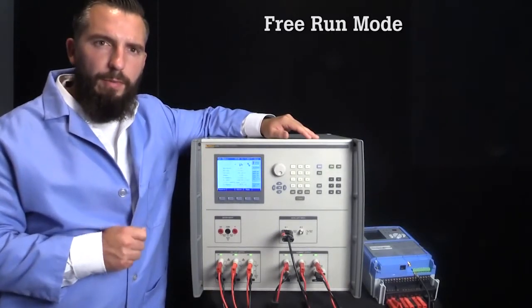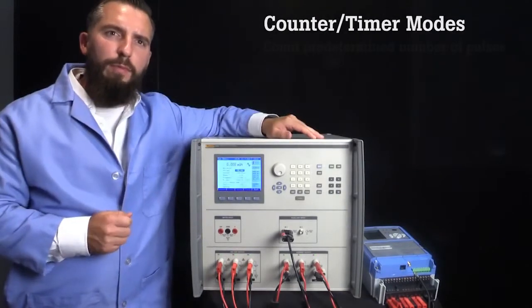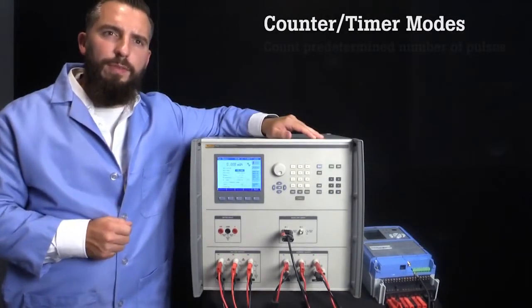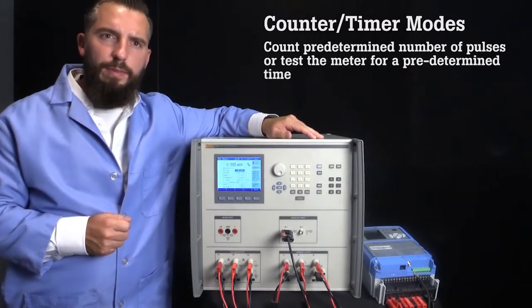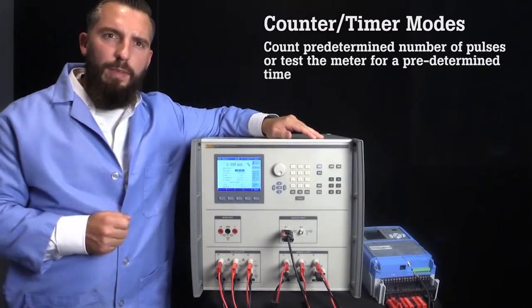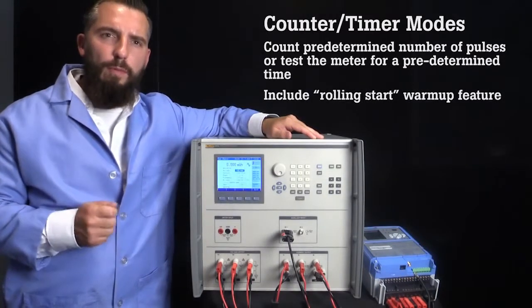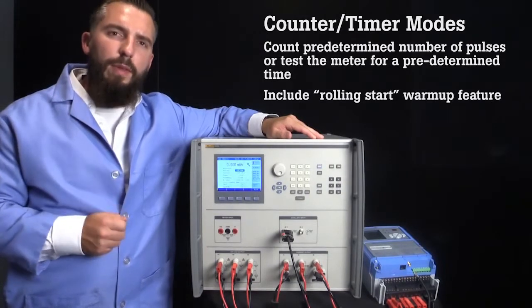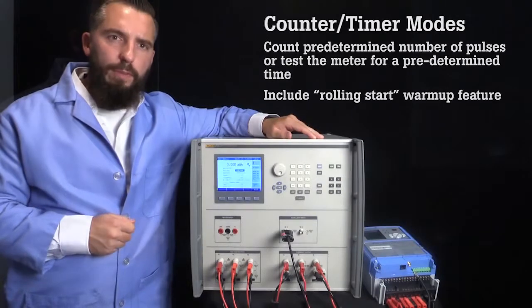For that, we recommend the counter mode or timer mode. The reason counter and timer modes are more repeatable methods to test energy meters is that they either count a predetermined number of pulses from the meter under test or they test the meter for a predetermined amount of time. Both the counter and timer modes have a warm-up feature for the UUT. This counter method is also known as rolling start method because of the warm-up feature.